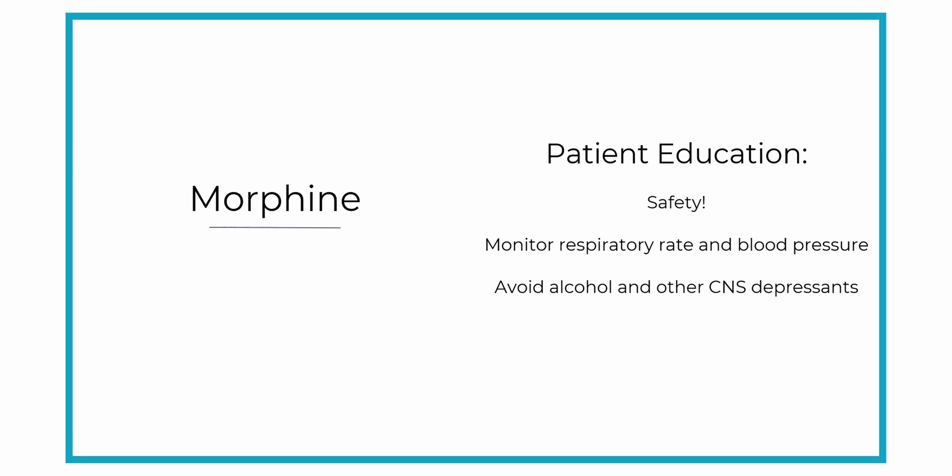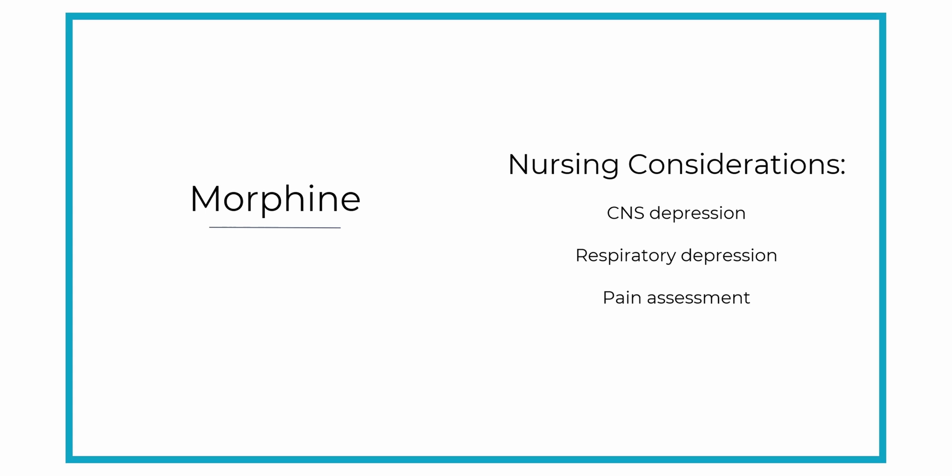Remember, morphine binds to the opiate receptors in the central nervous system causing CNS depression, which causes everything to slow down. Be sure to monitor your patient's respiratory status closely, as well as performing thorough and frequent pain assessments.